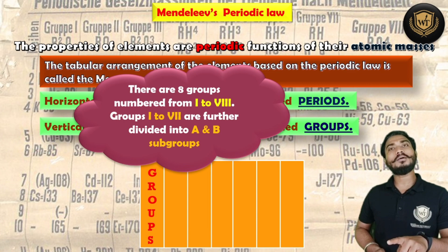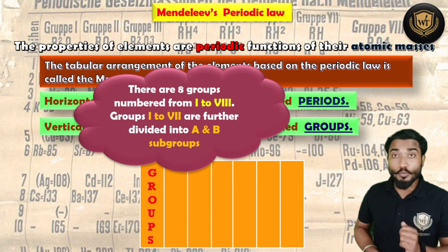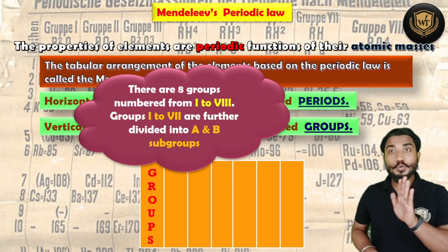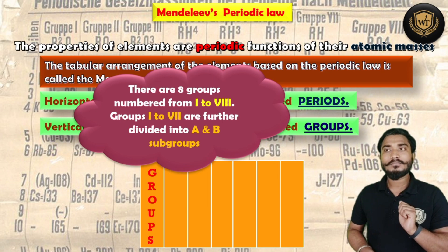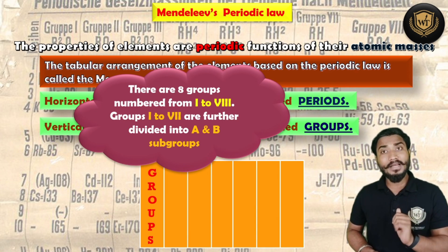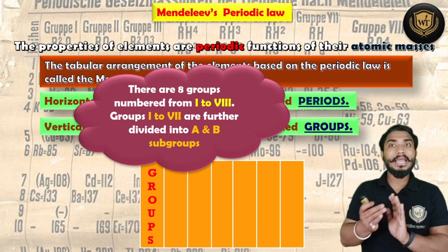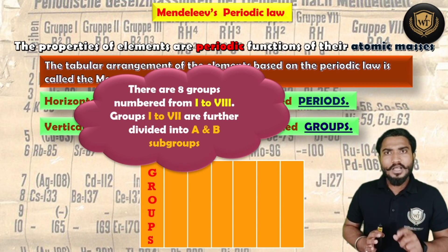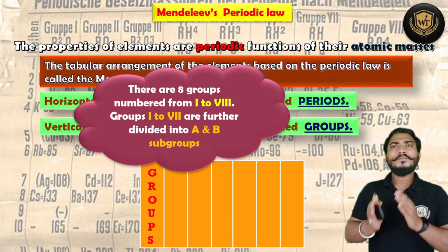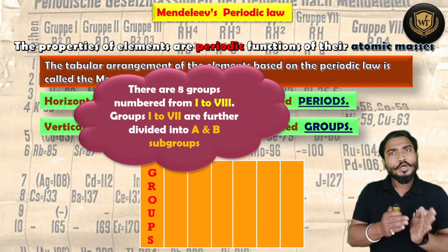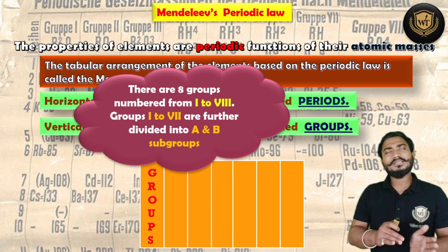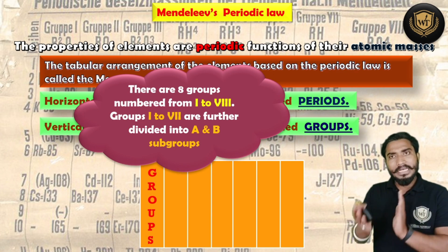These 8 groups were numbered in Roman numerals from I to VIII. They were also further subdivided into A and B subgroups. However, this subdivision was only applicable from groups I to VII — we will discuss why later on.